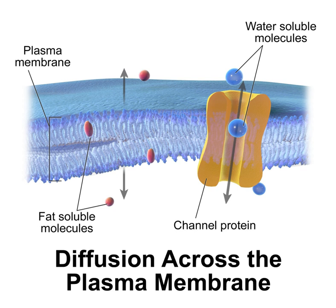Lipid bilayers are generally impermeable to ions and polar molecules. The arrangement of hydrophilic heads and hydrophobic tails prevents polar solutes — amino acids, nucleic acids, carbohydrates, proteins, and ions — from diffusing across the membrane, but generally allows passive diffusion of hydrophobic molecules. This affords the cell the ability to control the movement of these substances via transmembrane protein complexes such as pores, channels, and gates. Flippases and scramblases concentrate phosphatidylserine, which carries a negative charge, on the inner membrane, creating an extra barrier to charged moieties. Membranes also facilitate the synthesis of ATP through chemiosmosis in prokaryotes and in the mitochondria and chloroplasts of eukaryotes.